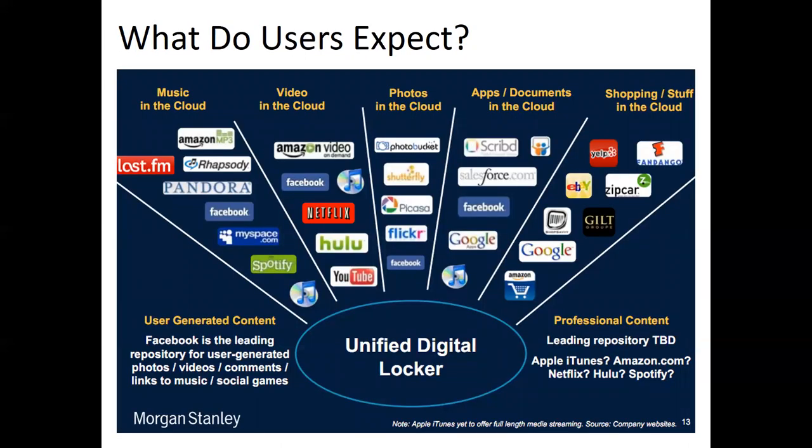In our next picture we can see how users expect what the network is. This picture shows a unified digital logger with certain parts: in the first part it's music in the cloud, such as Spotify or Facebook; the next part can be Netflix, YouTube, or Amazon Video; in the third part it can be photos using Photoshop, Picasso, or Facebook; then there are apps or documents in the cloud such as Google or Facebook; and lastly, shopping and more.